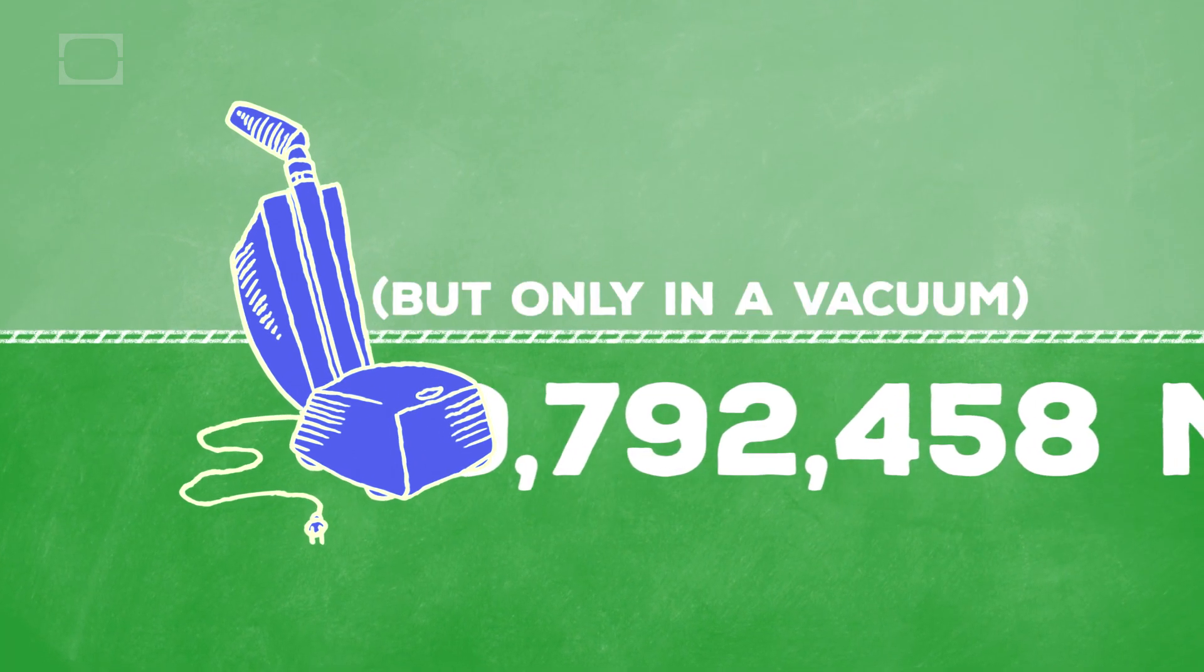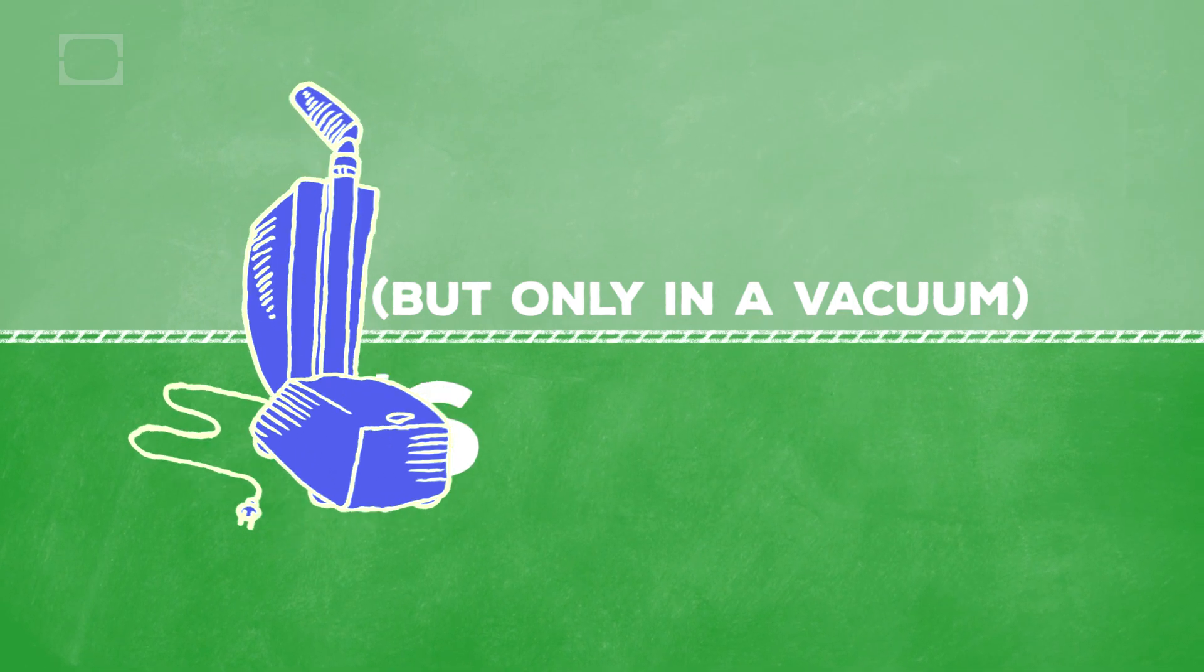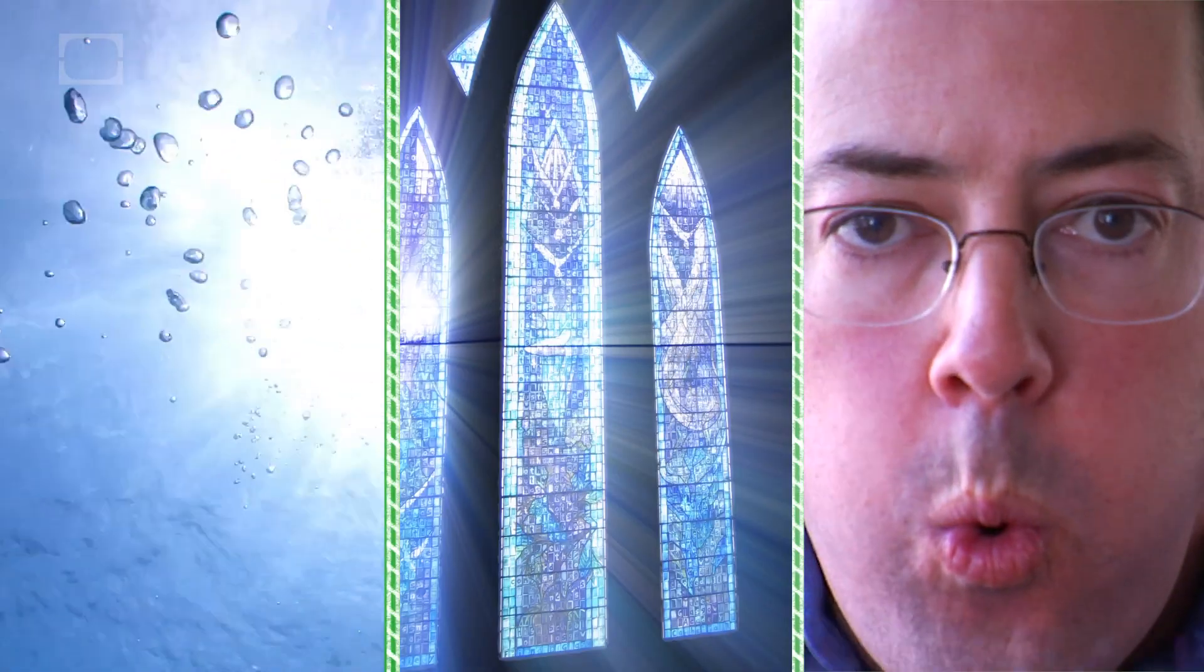But that's not always the speed. That calculation is measured in a vacuum, without any other variables. The speed of light slows down when going through water, glass, or even air.